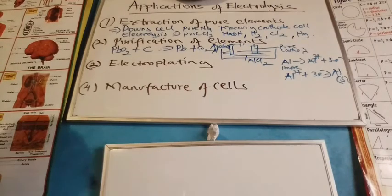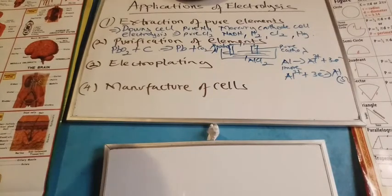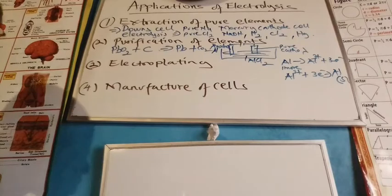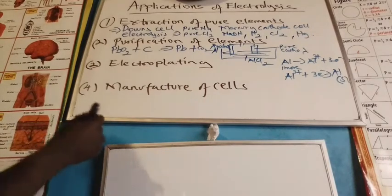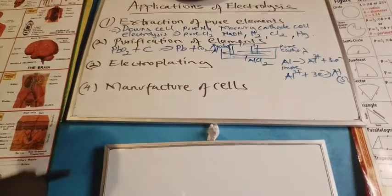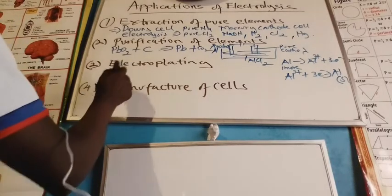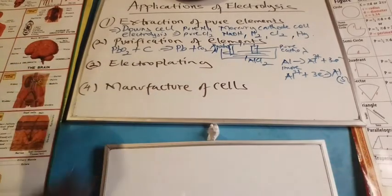Number two, electroplating. Electroplating is the process by which a metal is used to cover another metal. And in this case, the aim is to protect the metal from rusting and other corrosive processes.